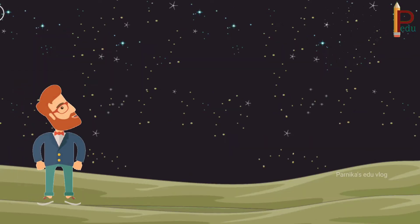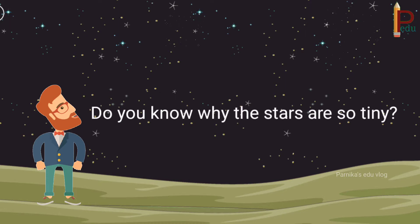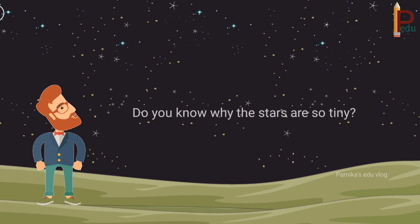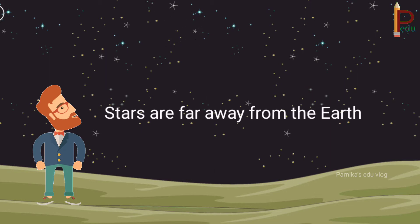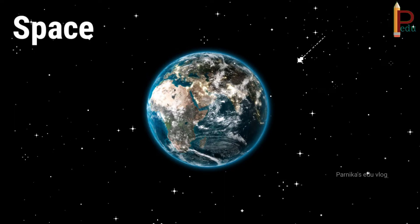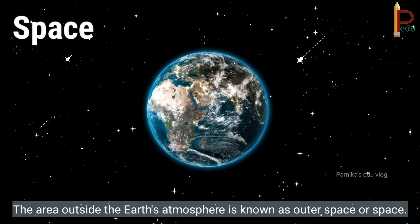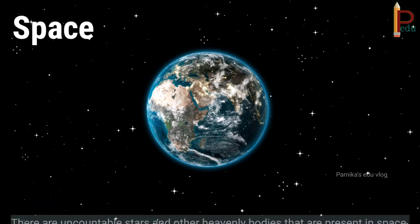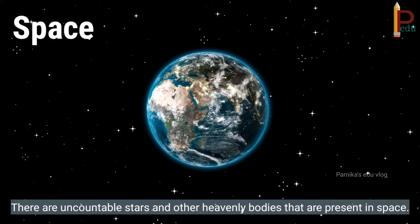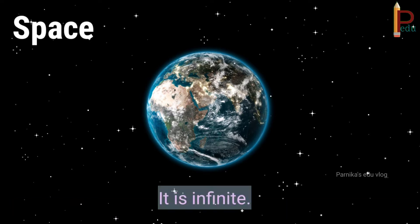Children, look at the night sky. Do you know why the stars are so tiny? Because stars are far away from the earth. Space, the area outside the earth's atmosphere, is known as outer space or space. There are uncountable stars and other heavenly bodies that are present in space.